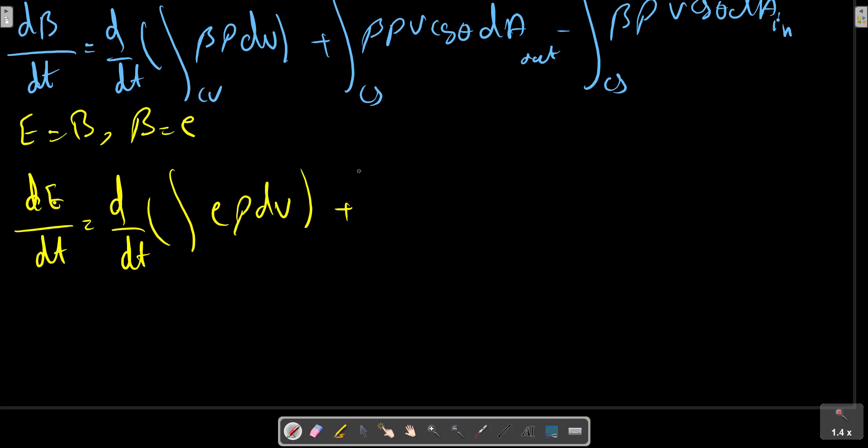Integration of, plus sigma beta_i M_i out minus beta_i M dot_i in, equals to...